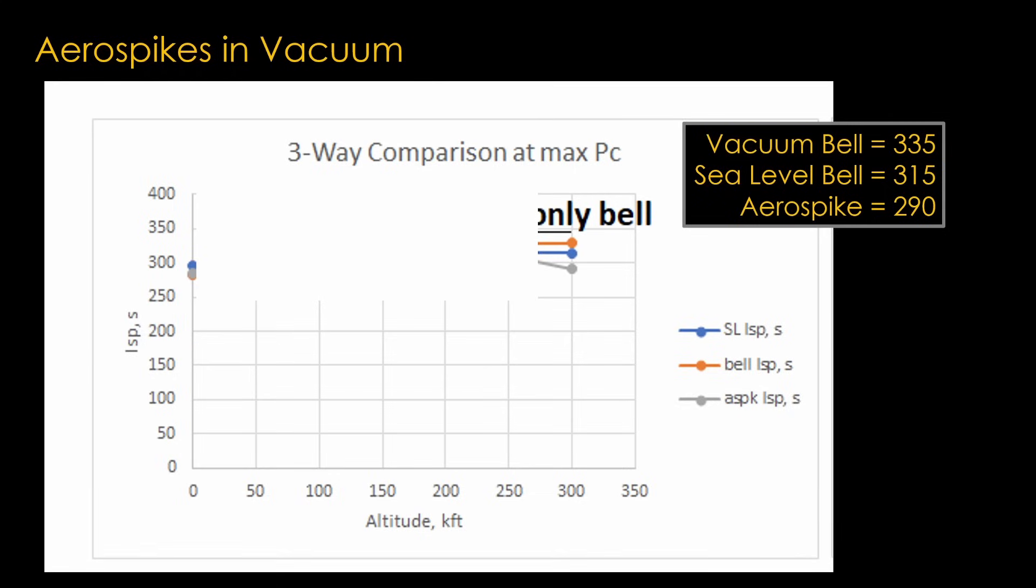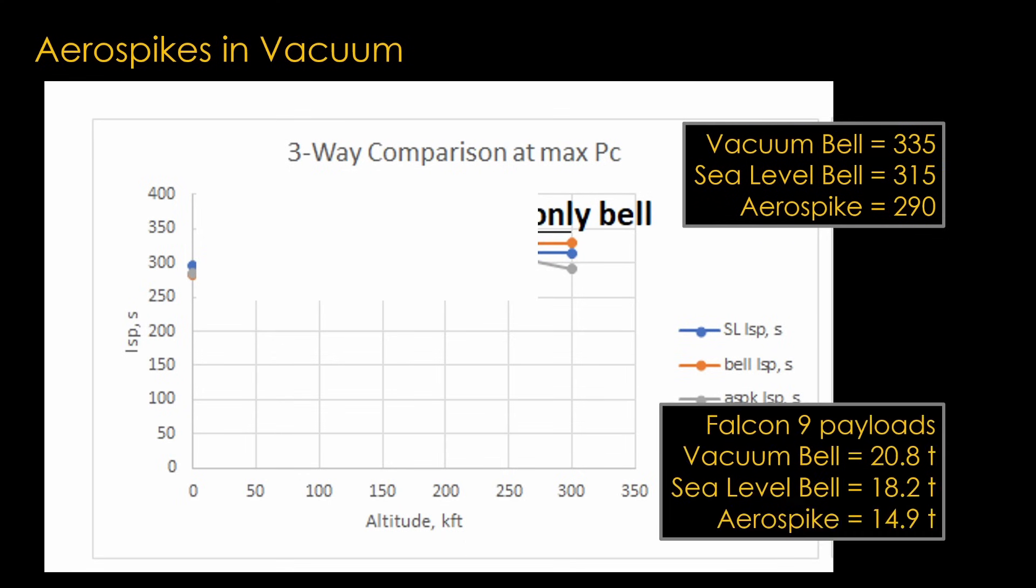That the vacuum bell worked better was not a big surprise to me, but that a sea-level bell beat the aerospike so easily was a significant surprise. Plugging those numbers into my Falcon 9 model, I found that the vacuum bell would give a fully expendable payload of 20.8 tons, the sea-level bell would give a payload of 18.2 tons, and the aerospike would only give a payload of 14.9 tons. That's a reduction of 28% with the aerospike design compared to a full vacuum design. You would be throwing away a lot of payload.